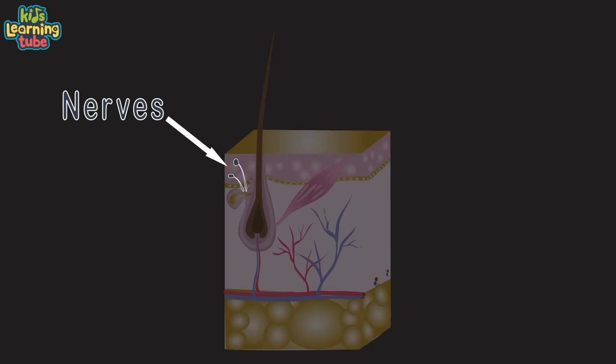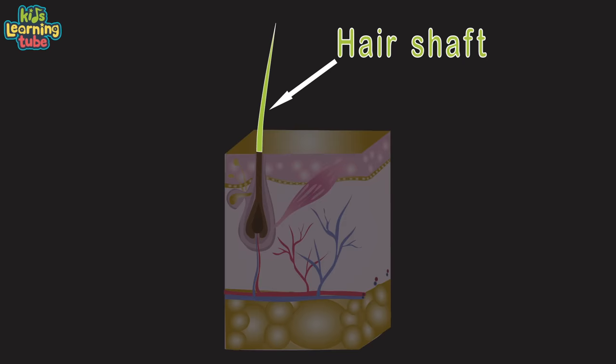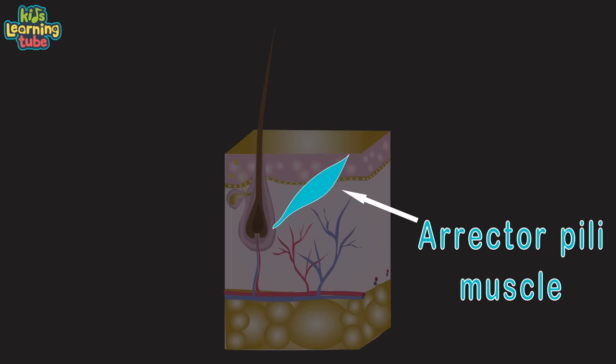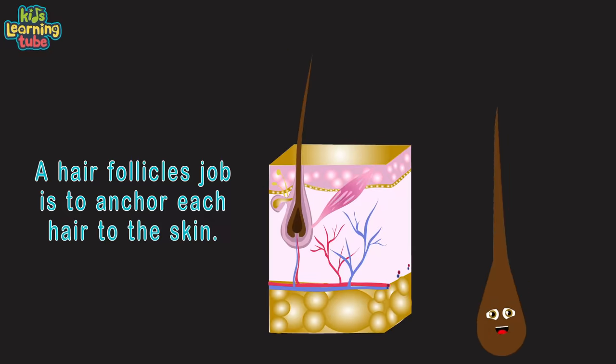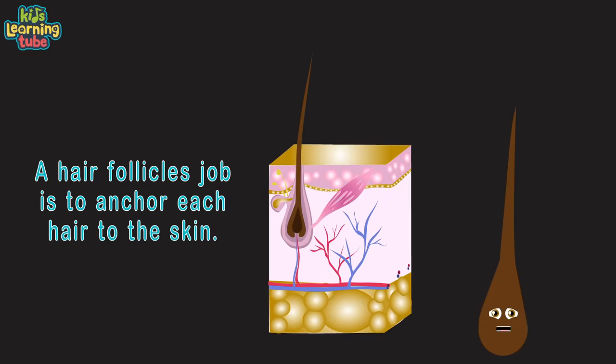Then you see the nerve and you see the hair shaft. The erector pili muscle causes the hair to stand on end. A hair follicle's job is to anchor each hair to the skin.